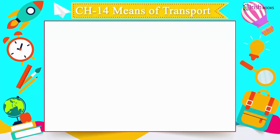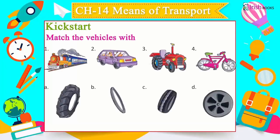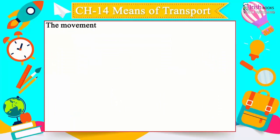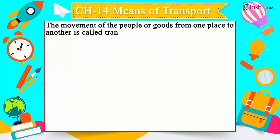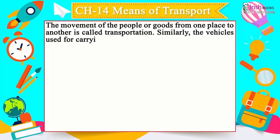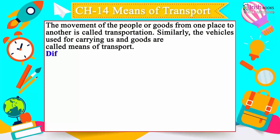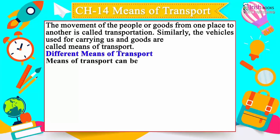Chapter 14: Means of Transport. Kickstart — Match the vehicles with their wheels. The movement of people or goods from one place to another is called transportation. Similarly, the vehicles used for carrying us and goods are called means of transport.